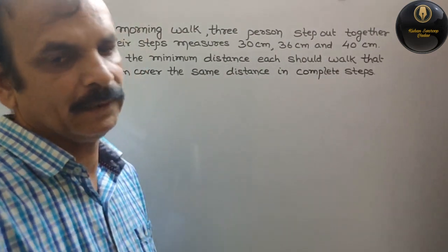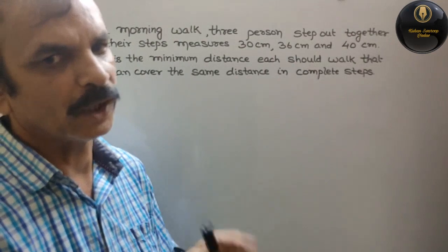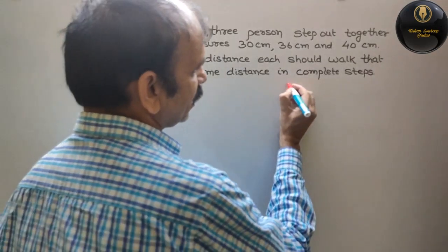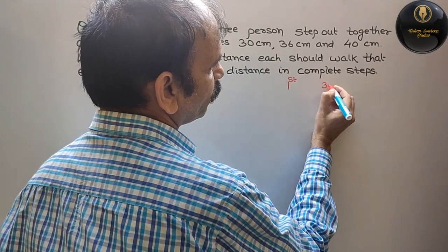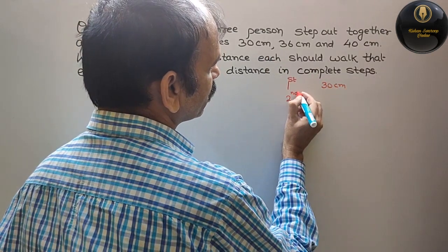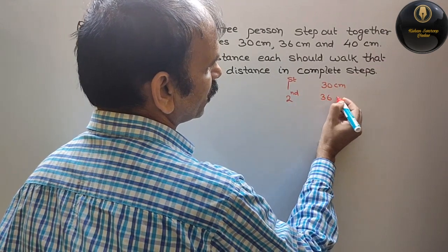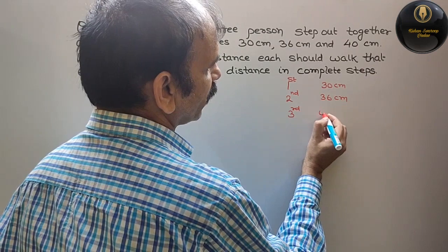What does this mean? We have three people. First person's step is 30 cm. Second person's step is 36 cm. And third person's step is 40 cm.